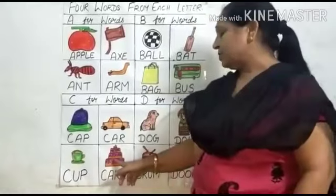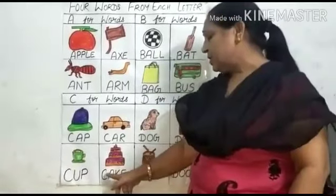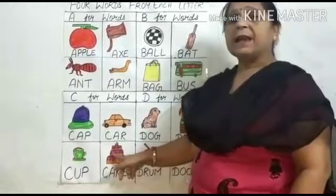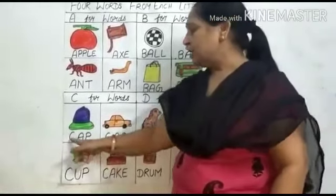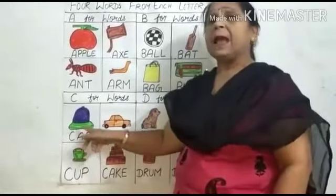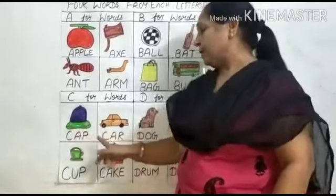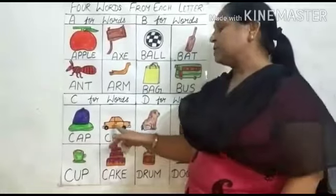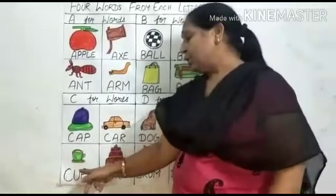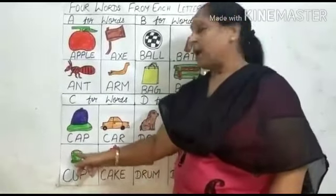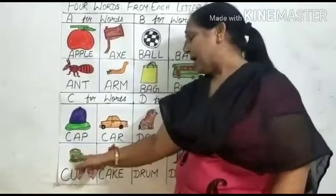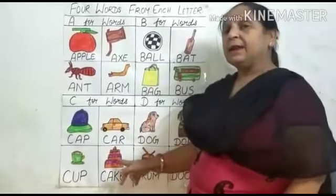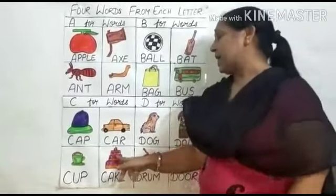What is this? This is a cake. C-A-K-E. Cake. Cake means cake. C-A-P. Cap. Cap means topi. C-A-R. Car. Car means car. C-U-P. Cup. Cup means pyala. C-A-K-E. Cake. Cake means cake.